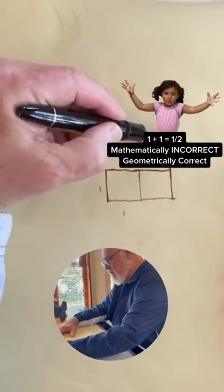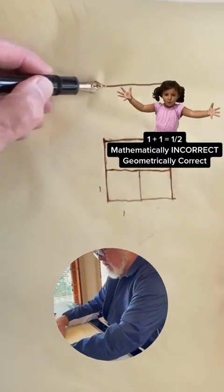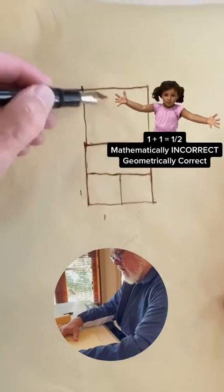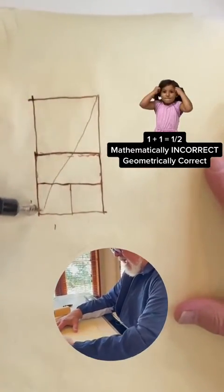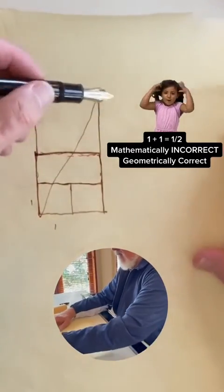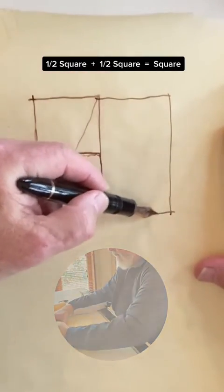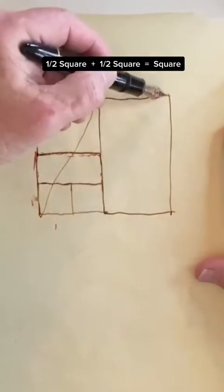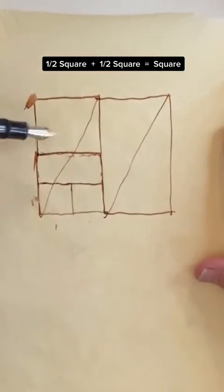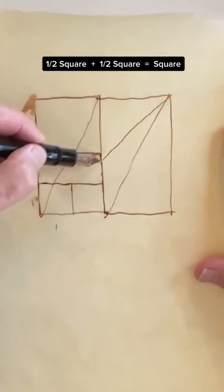If you take a square and add another square to it, this is a half square. If you add another half square to it, you end up with two half squares, or one big square.